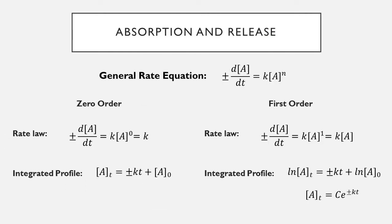A few math principles cover the general absorption or release kinetics of a drug from a drug delivery device, including metabolism and elimination. They all follow a general rate equation: the change in concentration with respect to time equals some constant k times the concentration of the drug raised to order n. The plus or minus sign depends on perspective — absorption is positive, while drug release leaving the vehicle is negative.